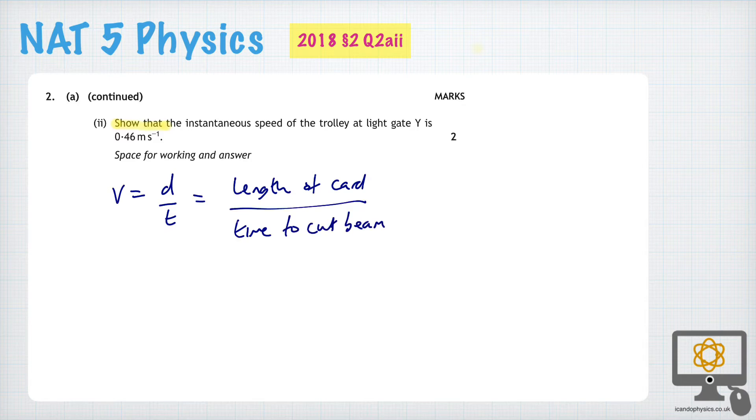So in this question, what information do we have? We know that the length of card is 0.045 centimeters and we know the time to cut the beam is 0.098. Those are all given in the table of information.